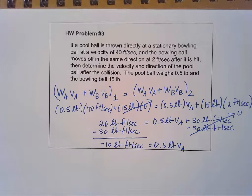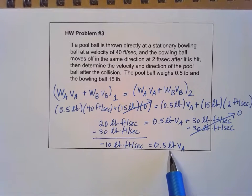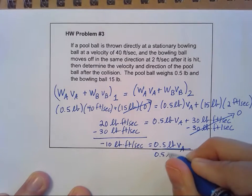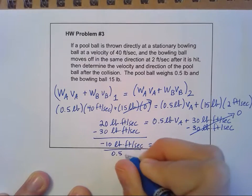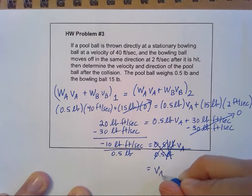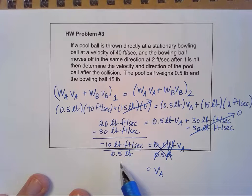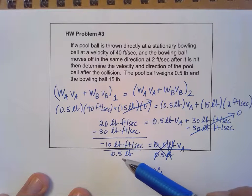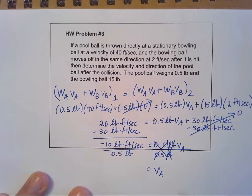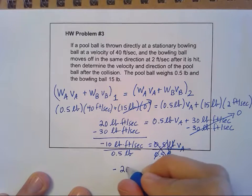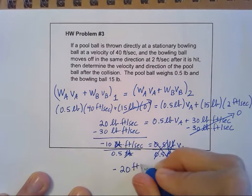Now I'm to the point where I can isolate that VA. I've got a constant on one side, I've got a variable here with a coefficient. I'm going to divide each side by that coefficient, divide each side by the 0.5 pounds. I'm left on this side with VA. Here I have a negative 10 divided by a 0.5, which is really the same thing as negative 10 divided by a half. If I'm dividing by a half, it's the same thing as multiplying by two. A negative divided by a positive is going to give me a negative, and it's a negative 20. These pounds will cancel and I'm left with feet per second.